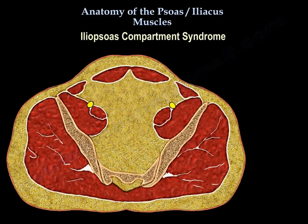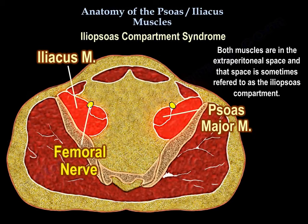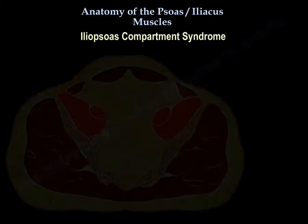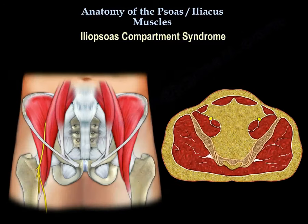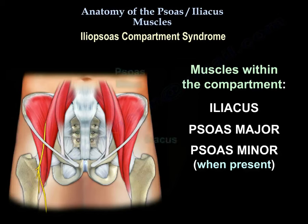Iliopsoas compartment syndrome: both muscles are in the extraperitoneal space, and that space is sometimes referred to as the iliopsoas compartment. Muscles within the compartment are the iliacus, psoas major, and psoas minor when present.